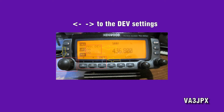Step number three: using the left and right arrows, navigate to the deviation setting. The values that you see there, you want to write those down. In the event that you need to revert back to these settings, you'll know what they are. That's a really important step.